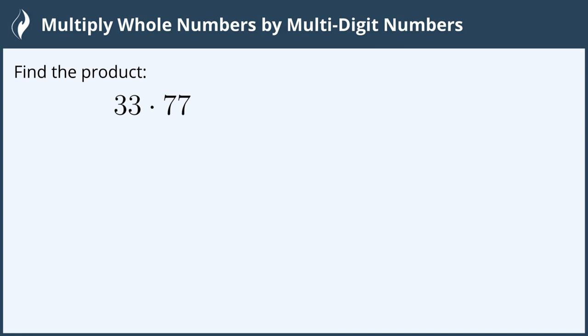When I multiply these I rewrite them very similar to how we rewrite when we do addition. We line them up so all of the place values are in a line and I always put the larger one on the top and the smaller one below.